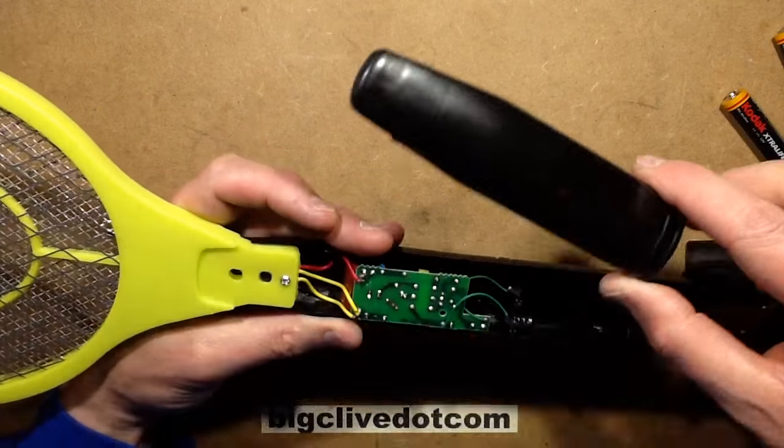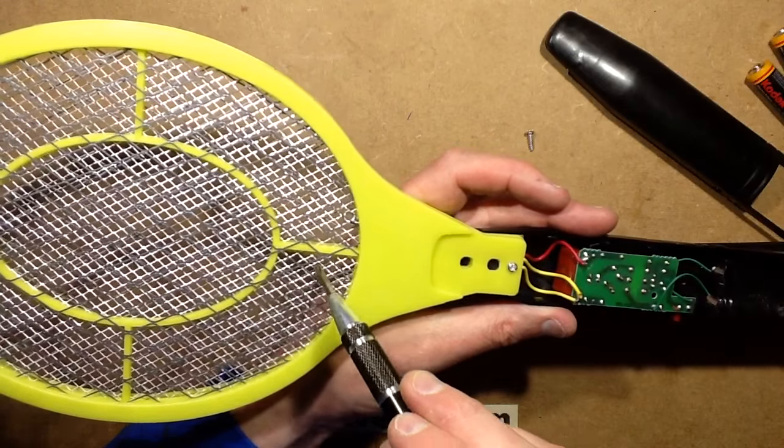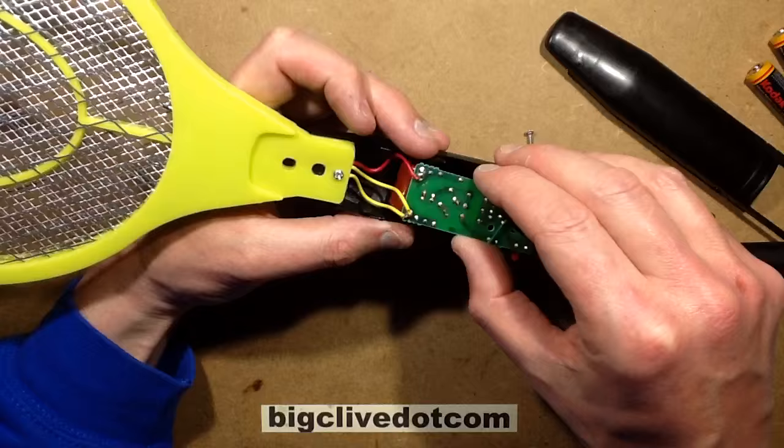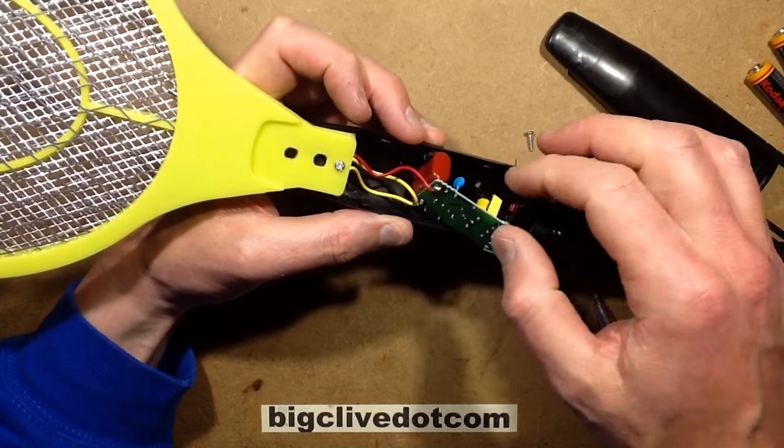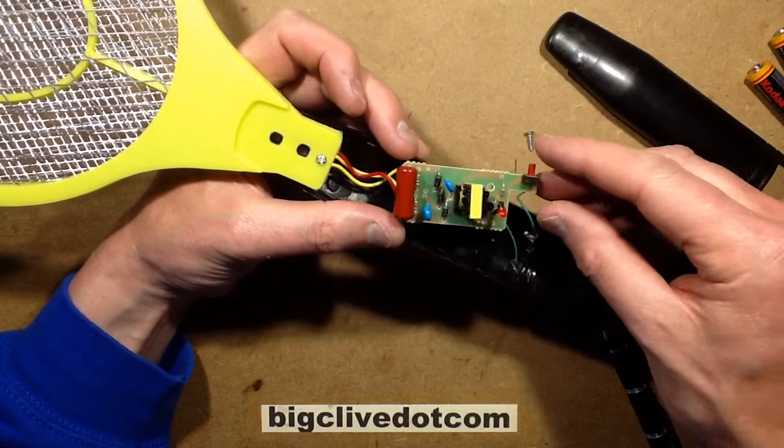This does seem to have a discharge circuit. Yeah, I had to take that one out, but I'll just double check by touching that. So here's the circuit board. See if I can get a zap off it.